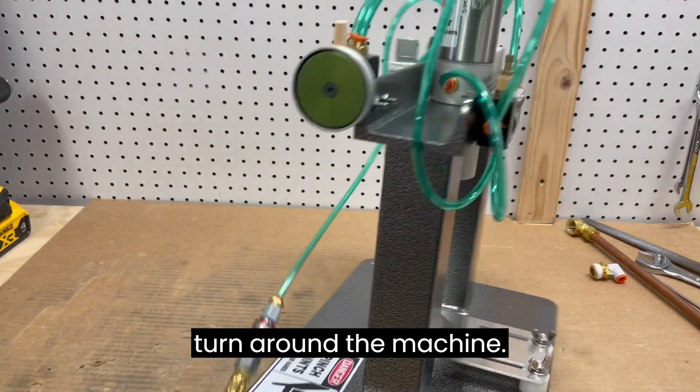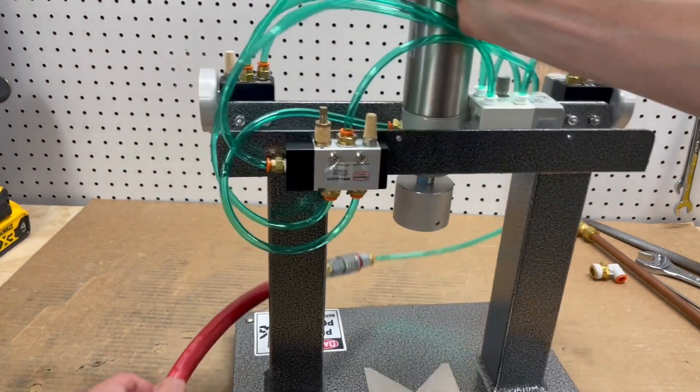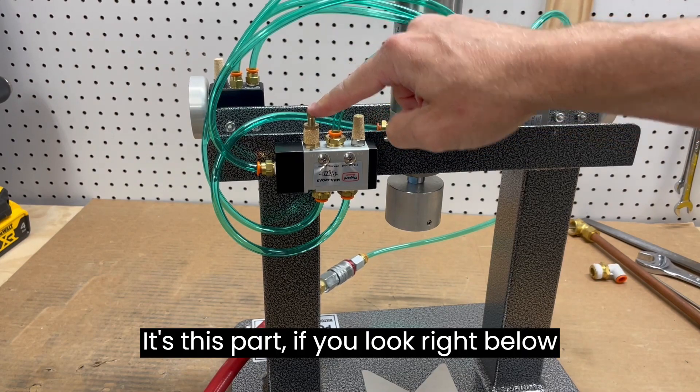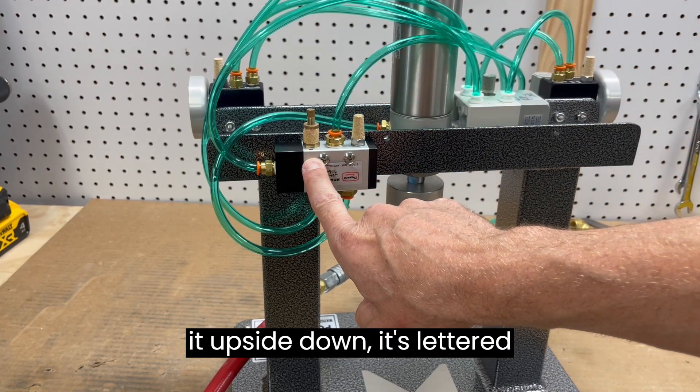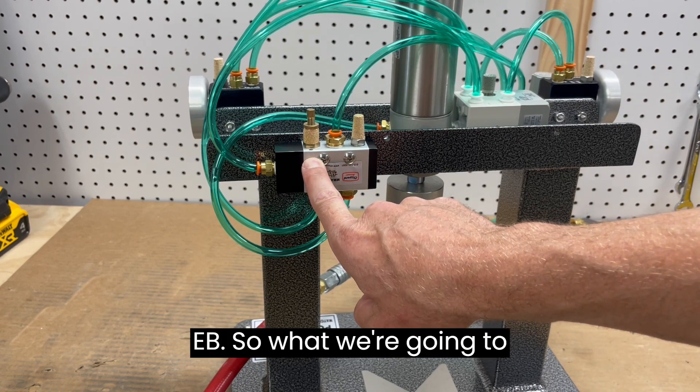So I'll turn around the machine. It's this part. If you look right below it, upside down, it's lettered port EB, ECHO Bravo.